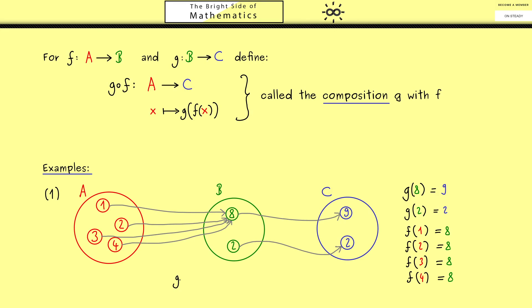Now the question is what is the composition g after f. For example, what comes out when we put in the element 1? We already know we start with f which means from 1 we go to 8 and then we arrive at 9 after applying g.